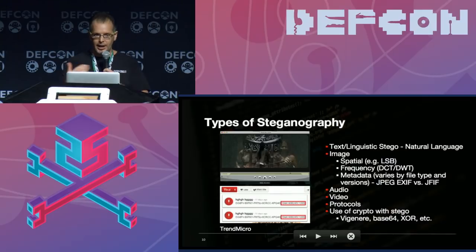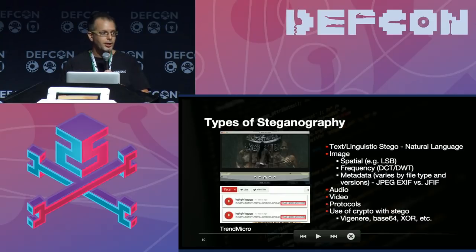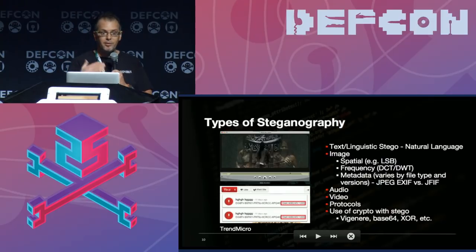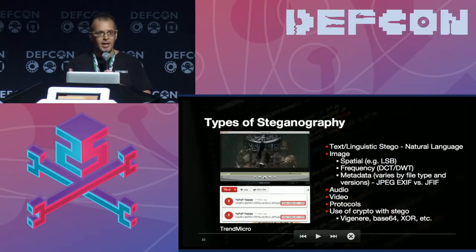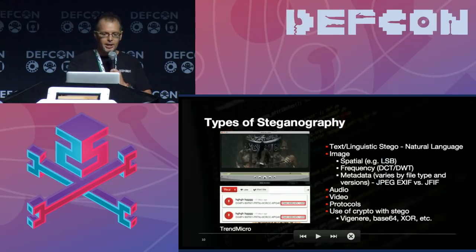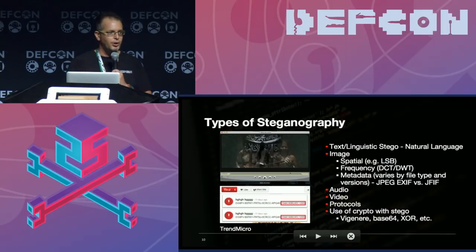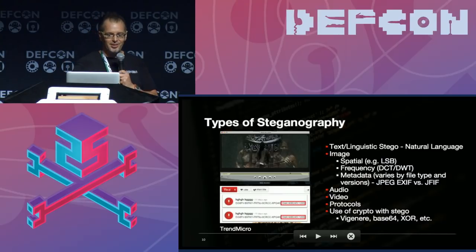We'll talk more about how we use those techniques within social media. We've also done lots of research across audio and video. With an MP3, for example, there's typically a copy of the album cover embedded as a JPEG within that MP3. If I can hide stuff in an image, why can't I hide it within the JPEG that comprises the album cover embedded within the MP3 itself? Those who author stego programs may additionally employ different types of cipher techniques — Vigenère cipher, XOR, and many other types of crypto.